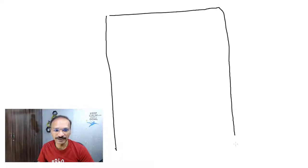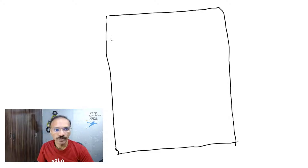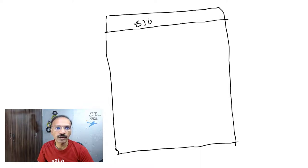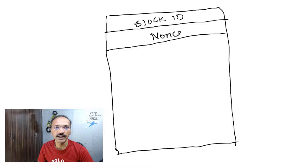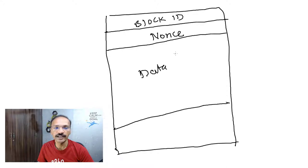Let me draw a block so I can explain in detail. The first component of the block is the block ID — similar to page numbers, we have block IDs. The next component of the block is called the nonce, which stands for 'number only announced once'.